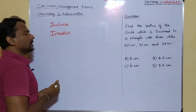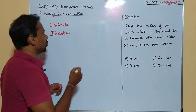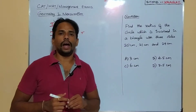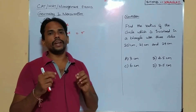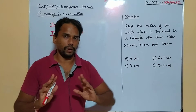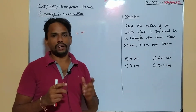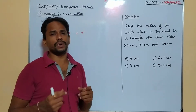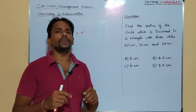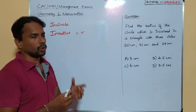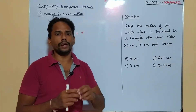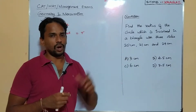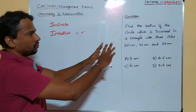The circle's name is incircle and its radius is called the inradius, usually notated as r. Our question asks us to find the value of that inradius. Here we have a triangle with a circle inscribed in it, so that circle is the incircle and its radius is the inradius — that is what we need to find.